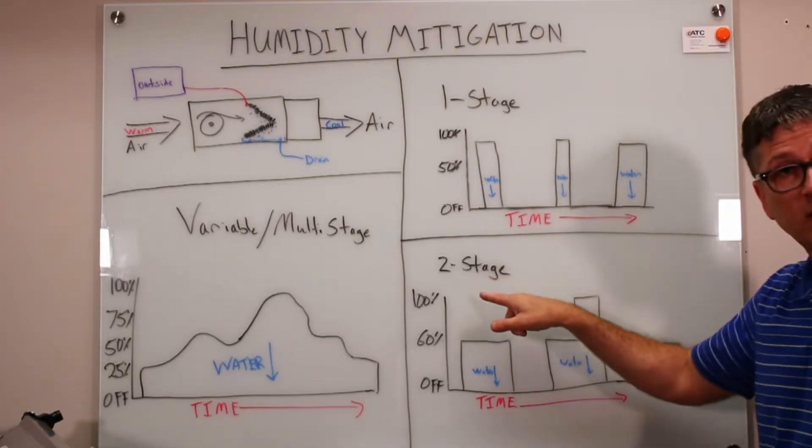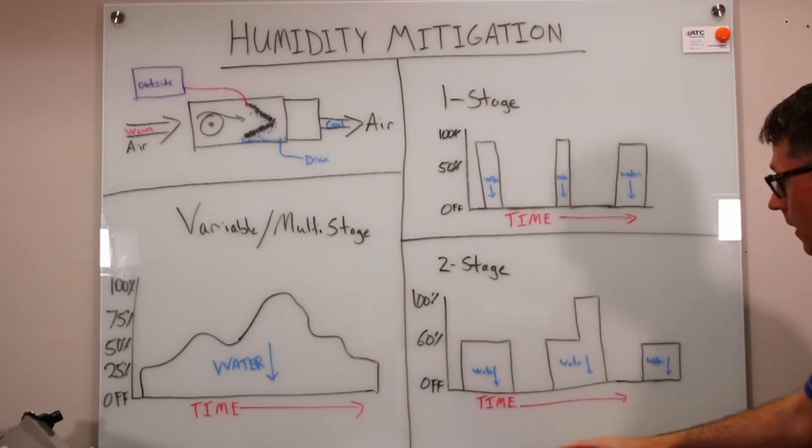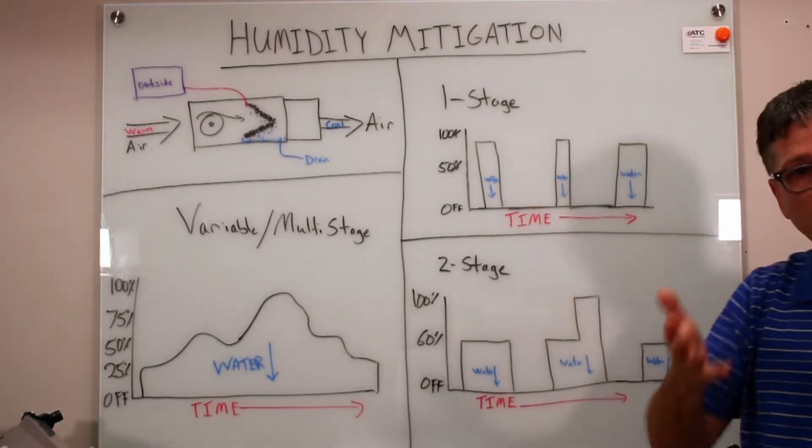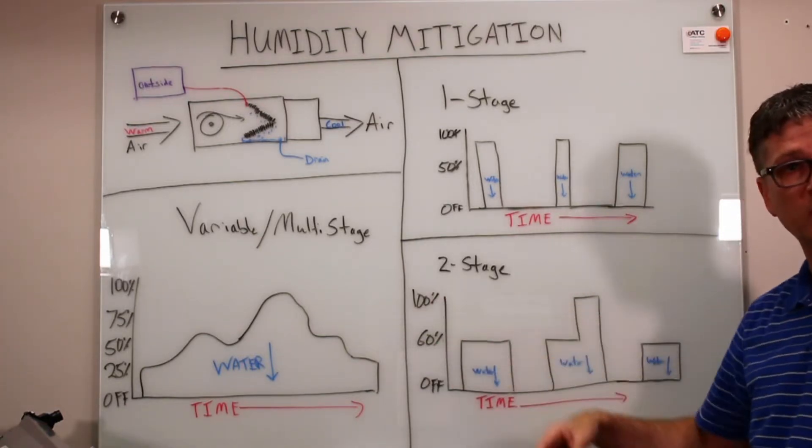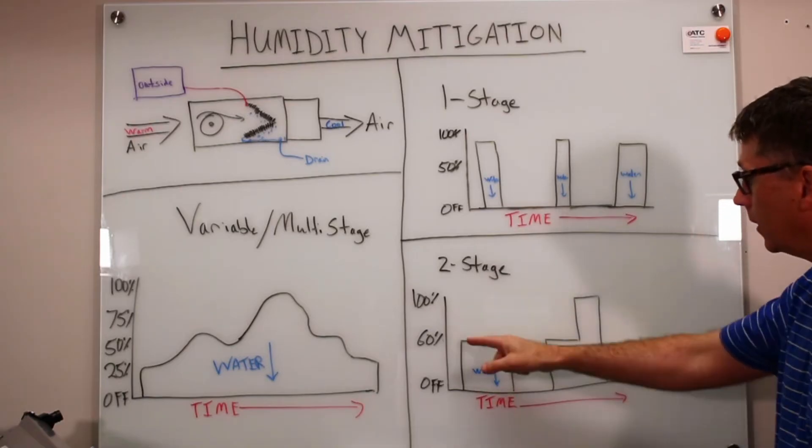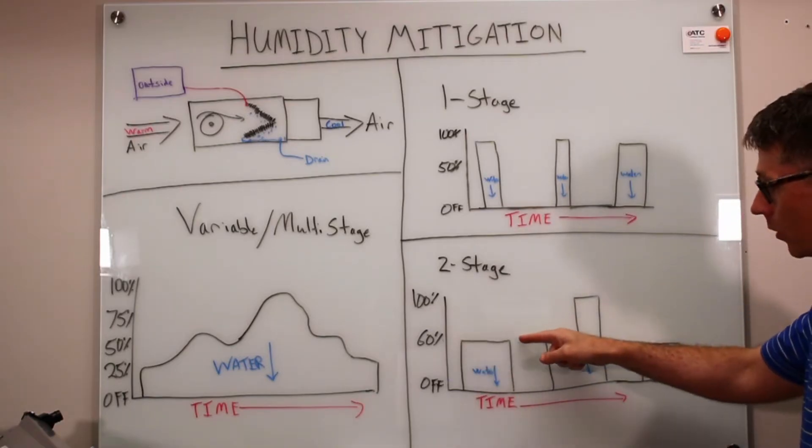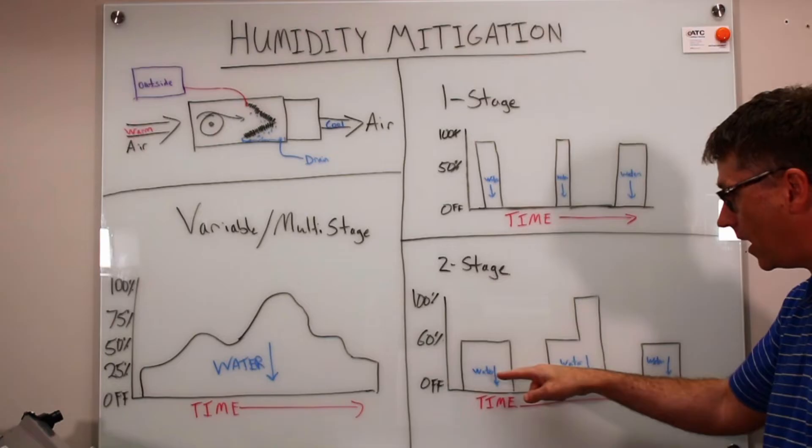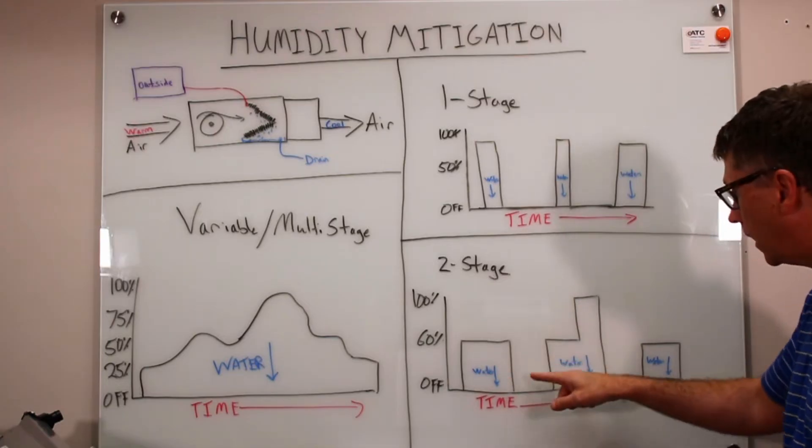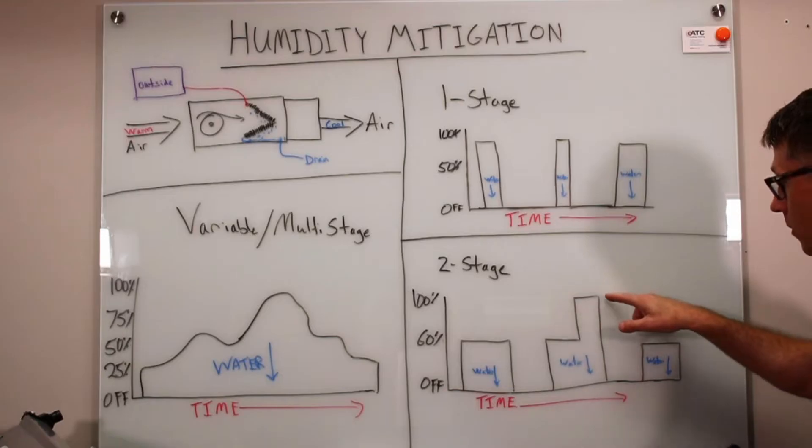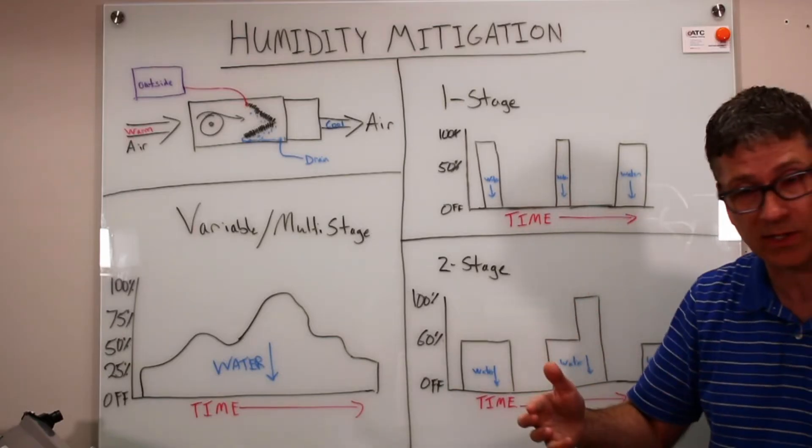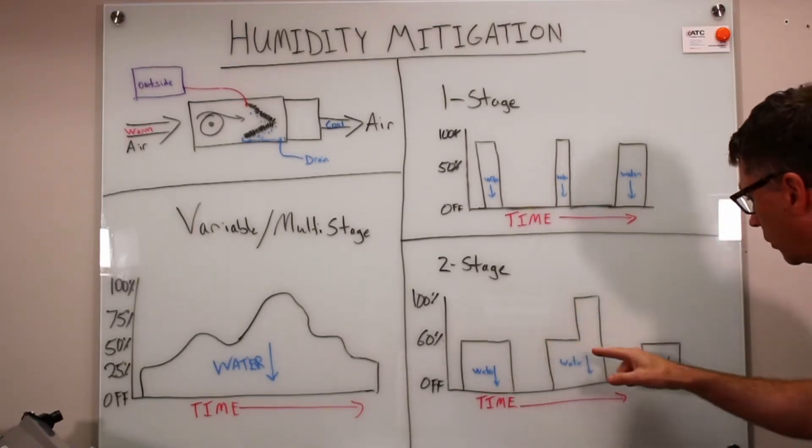In contrast, here's a two stage unit right here. Now a two stage unit in our case, let's assume that it runs at either 60% or 100%, depending on which stage it's calling. It'll come on and you see it runs longer at 60% and all that time is removing humidity. And then it shuts off and then it comes on at 60% and in this case it went up to 100% capacity it was trying to satisfy the thermostat but it runs longer each time.